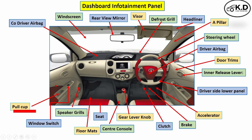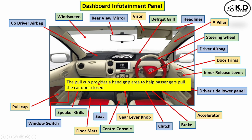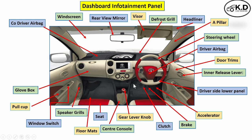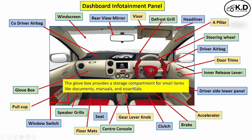The next part is the pull cup. The function of the pull cup is to provide the grip to pull the door from the inside. The next part is the glove box, which provides a small storage area for paper manuals and other things.